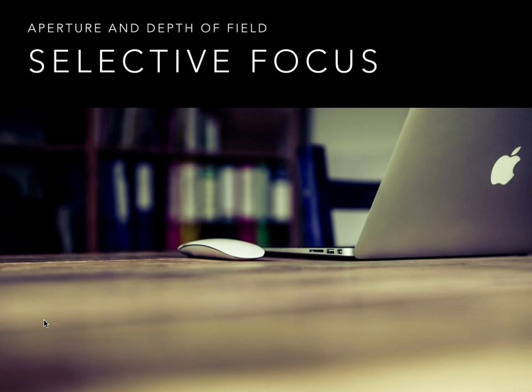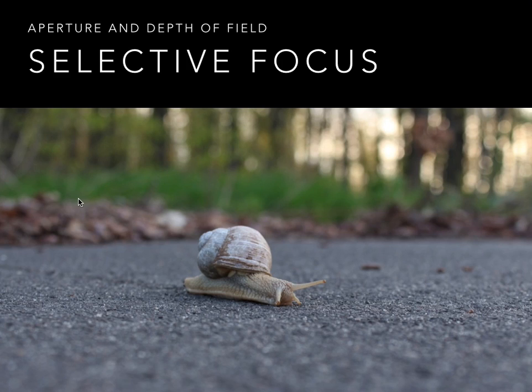Here's a great example where the mouse and computer are really focused, but everything in the foreground and background is losing focus — that would be a very wide aperture like f/1.4 or f/2, creating that very narrow slice of space that's in focus. And one last example: this little snail is in focus, and you can see how well focused the concrete is right around it, then how focus is lost in the foreground and background. This is a great technique to bring focus to one area and downplay distracting things in the background.